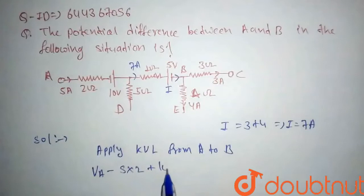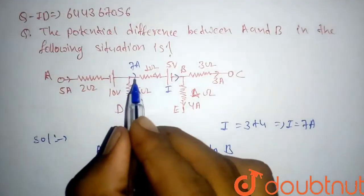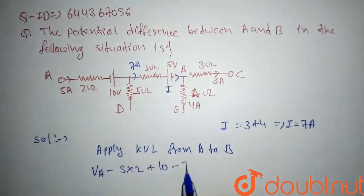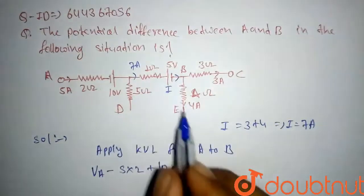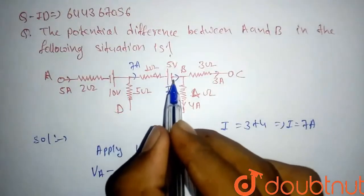Plus, so here will be minus 7 into 1, and here will be negative, so we will take minus 5 volt.